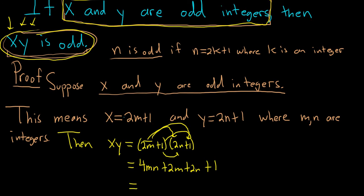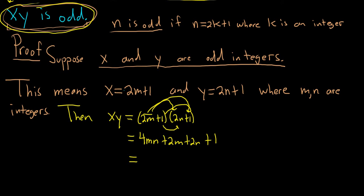So this is equal to, so it looks like this whole piece here is an integer, and we can pull out a 2, so this is 2 parentheses 2mn plus m plus n plus 1.